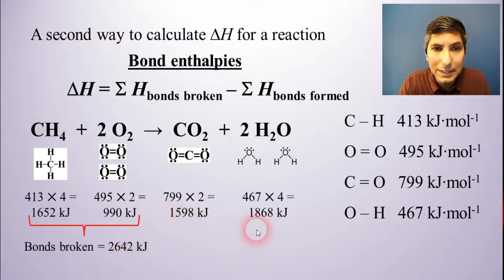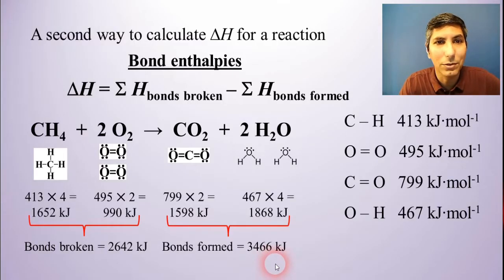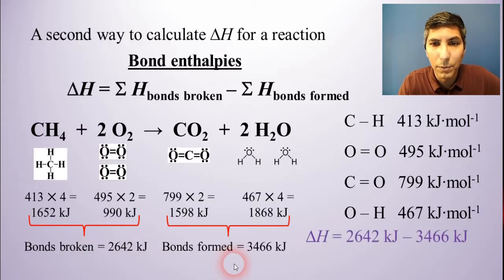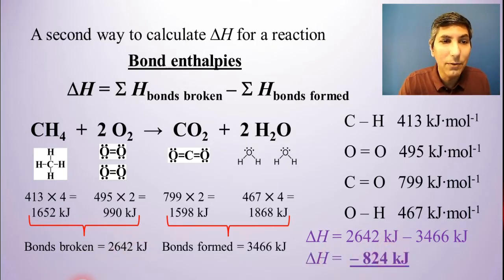Now, if I do the same thing on the right side, that's my enthalpy for the bonds formed. So I add those together, I get 3,466 kilojoules. So just take the left side minus the right side. Bonds broken minus bonds formed. And when I subtract that out, I find that the delta H for this reaction is about negative 824 kilojoules.